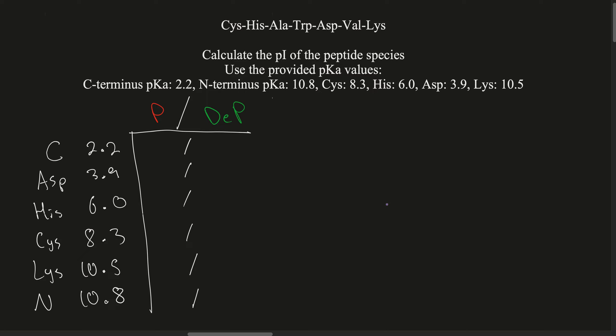What we're going to do in this problem is find the pI of the species. The pI is the pH at which this peptide species is going to have a total net charge of zero. The way I like to do this is by organizing the pKa's in an orderly fashion, and then writing down what it's going to look like when it's protonated and what it's going to look like when it's deprotonated.